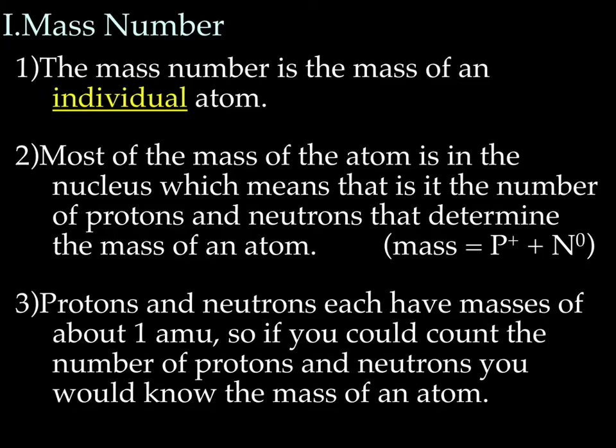Which means that it's actually just the number of protons and the number of neutrons that determine the mass of the atom. Remember, the mass of both a proton and a neutron are 1 amu. So you can almost count to figure out the mass. And the equation we discussed was mass equals number of protons plus number of neutrons. So if you could count the number of protons and neutrons you would know the mass of an atom.